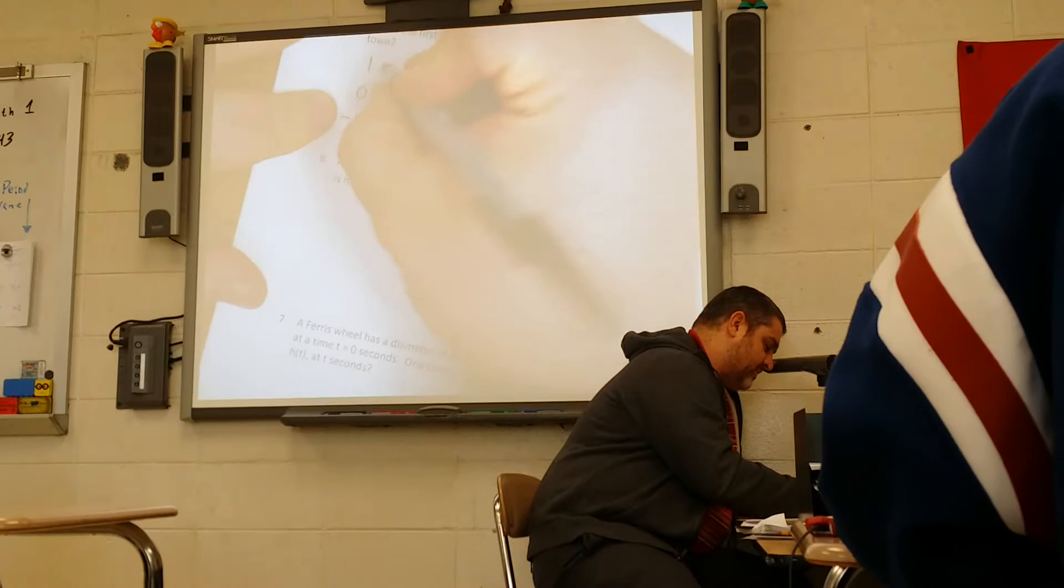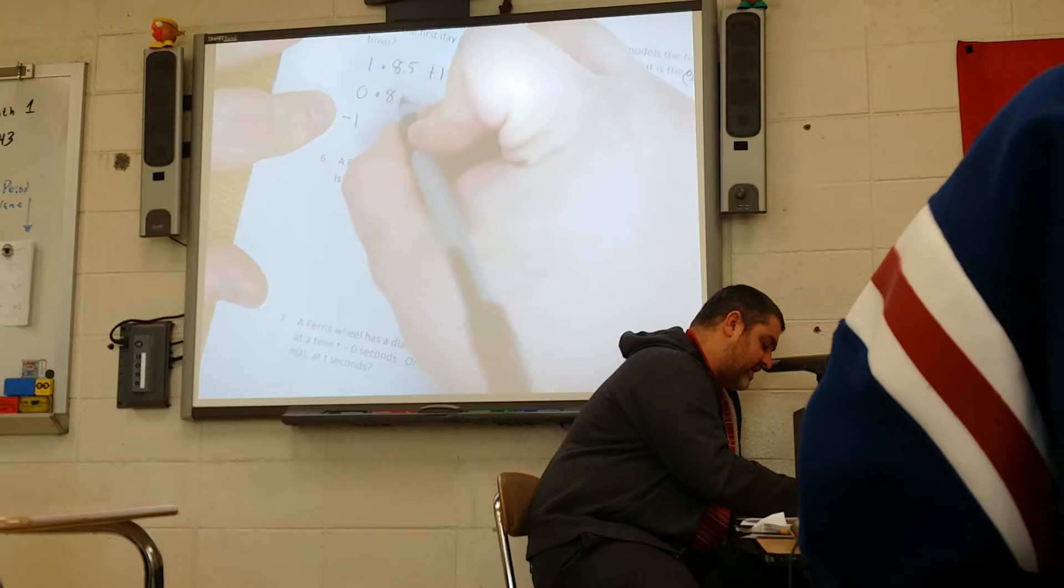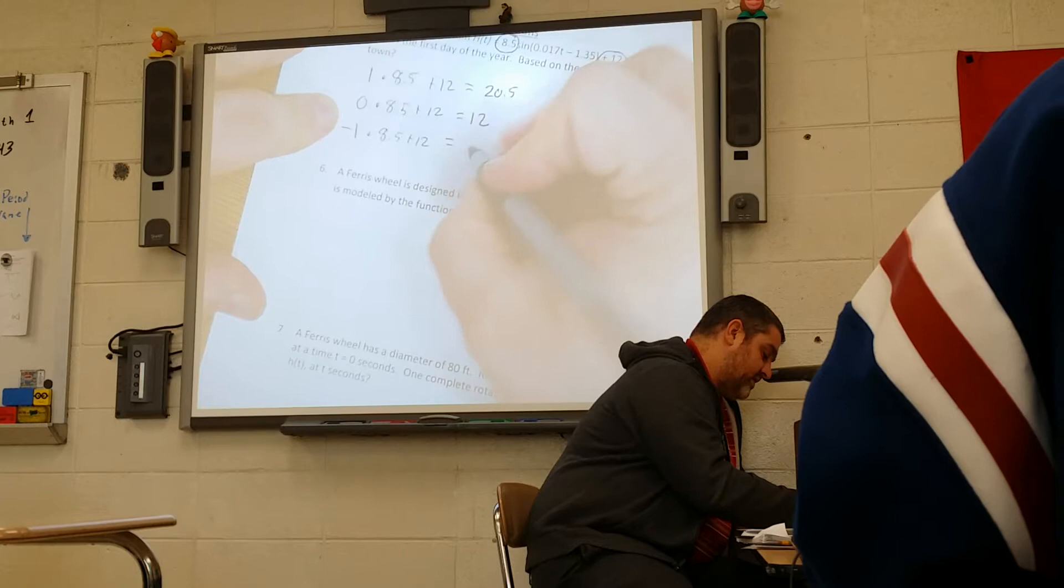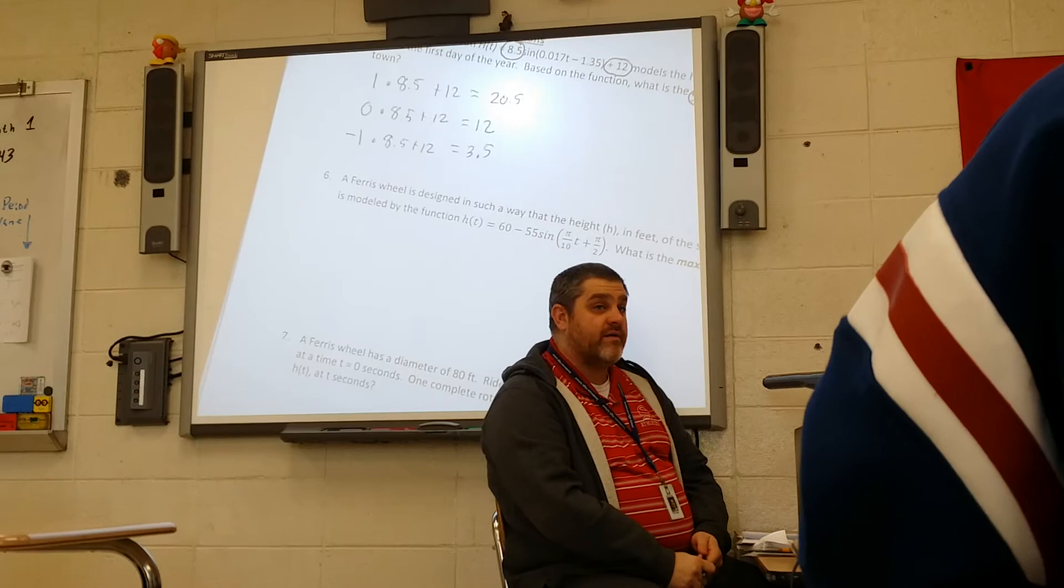So times 8.5 plus 12 for each value. That will give you 20.5, 12, 3.5.